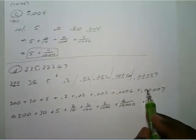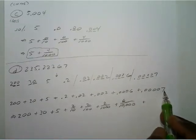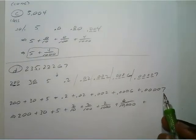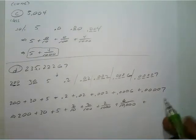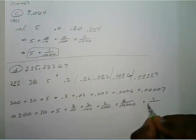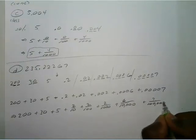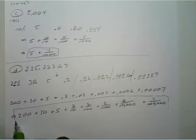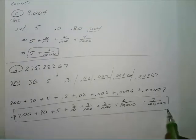Converting to fractional form: you have tenths, hundredths, thousandths, ten-thousandths, hundred-thousandths. So the answer is 200 plus 30 plus 5 plus 2 tenths plus 2 hundredths plus 2 thousandths plus 6 ten-thousandths plus 7 over one hundred thousand. That's the expanded form for D.